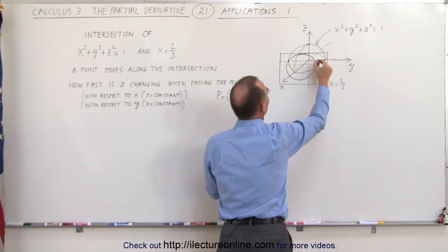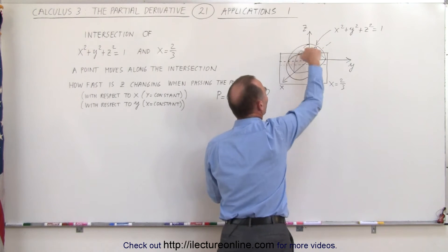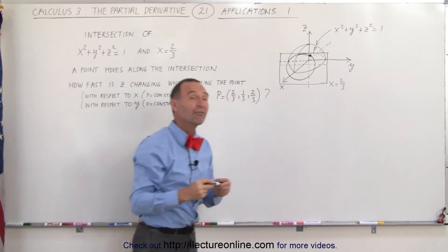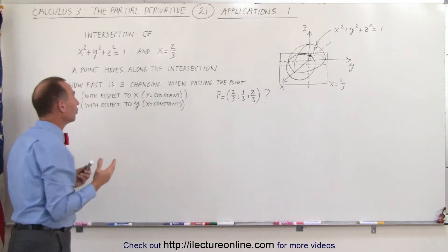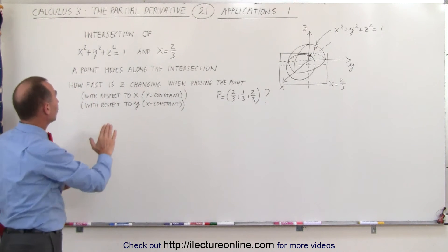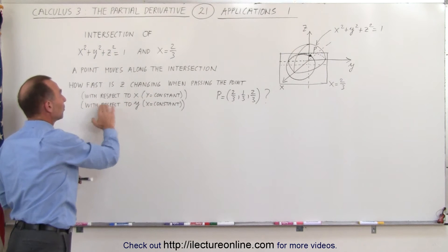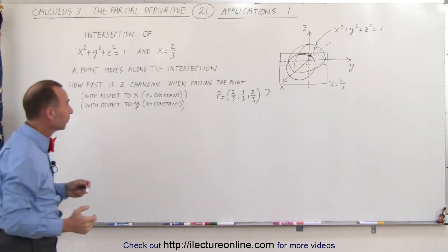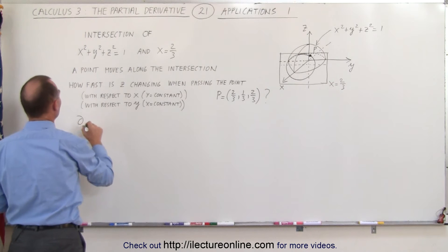The point would be somewhere in this neighborhood on the sphere. As you go around the circle, how fast is z changing? We need to find the partial derivative of z with respect to x, when y is constant, and with respect to y, when x is constant.